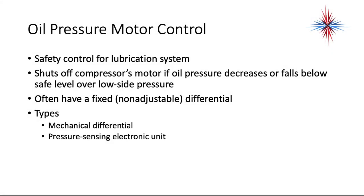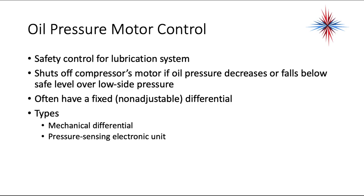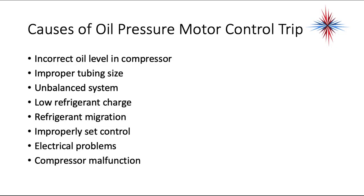Oil-pressure motor controls are safety controls for the lubrication system, used on larger systems. They shut off the compressor motor if the oil pressure decreases or falls below a safe level over low-side pressure. They are often a fixed, non-adjustable differential. There are two types: mechanical differential and pressure-sensing electronic unit. Common causes of oil pressure motor control trips include incorrect oil level in the compressor (the most frequent), improper tubing size, unbalanced systems, low refrigerant charge, refrigerant migration, improperly set controls, electrical problems, and compressor malfunctions.